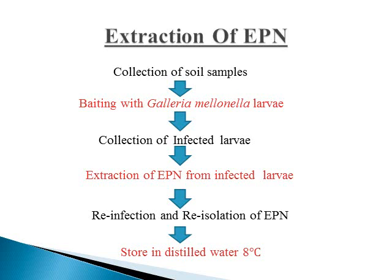If the temperature is less than 35 degrees Celsius, larval development will be slow. Extraction of EPN from the field to get natural isolates is a very easy method. We collect random soil samples from the field and bait fresh non-parasitized Galleria mellonella larvae into that soil. After a few days, the larvae will be infected with nematode, and we collect the infected larvae to extract or isolate the EPN from the infected larvae's body. We then re-infect and re-isolate the EPN for commercial production. After re-isolation, the EPN can be stored in distilled water at 8 degrees Celsius for further use.